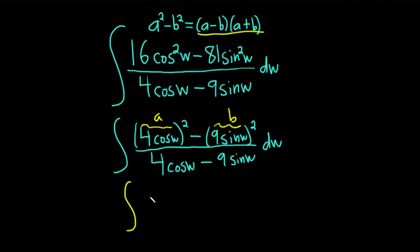So it's the integral of parentheses 4 cosine w minus 9 sine w. That's our a minus b. And then a plus b would be 4 cosine w plus 9 sine w.